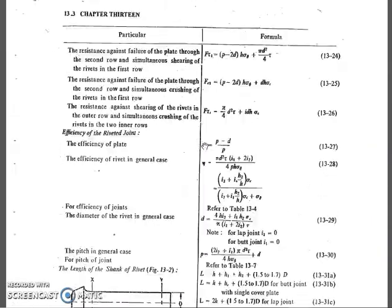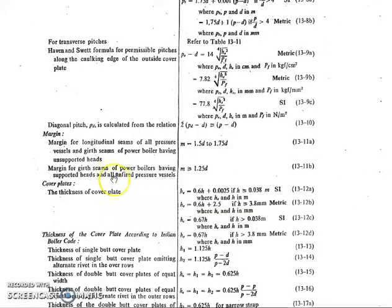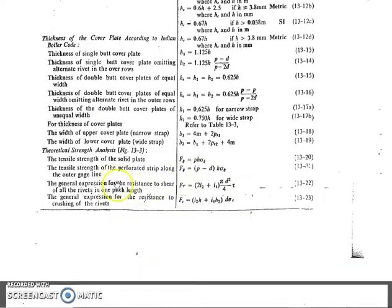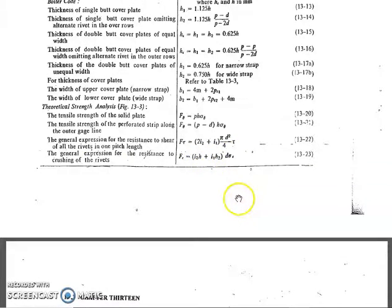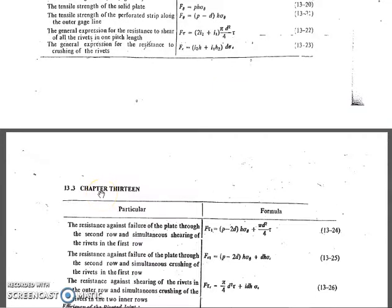For strength calculations, the tensile strength of the solid plate is given by equation 13.20: F_θ = p·h·σ_θ. The general expression for shear resistance of all rivets in one pitch line is equation 13.22: F_τ = (2i2 + i1)·π·d² / 4 × τ. The crushing strength resistance is: Fc = (i2·h + i1·h2) × d × σ_c.